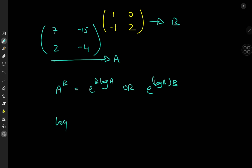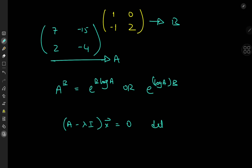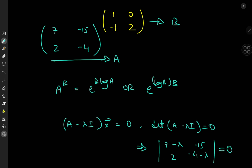I'm interested in the logarithm of matrix A. We've talked about applying logarithms and exponential functions to matrices using series expansions — that works for pretty much any holomorphic function. It gets a lot easier when the matrix is diagonalized, so we diagonalize matrix A first by solving det(A − λI) = 0. This gives us the matrix 7−λ, −4−λ, 2, −15 with determinant equal to zero.